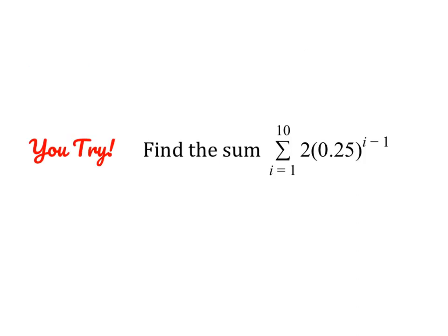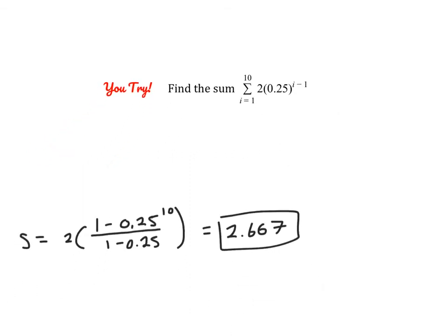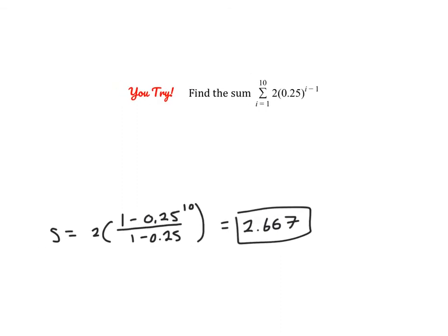You can plug this into your calculator and get a decimal approximation — you should get approximately 5.714. Go ahead and pause the video and give this problem a try. Using the same process — a sub 1 times 1 minus r to the power of n all over 1 minus r — you should get approximately 2.667.